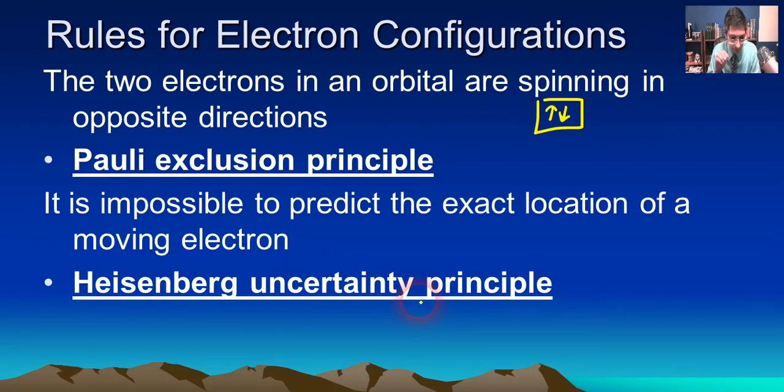Basically, we know that electrons are constantly in motion. They're always moving. And so you can't know exactly where they are. We can predict approximately about where it's going to be with a pretty good level of accuracy, but never exactly. That's called the Heisenberg uncertainty principle.